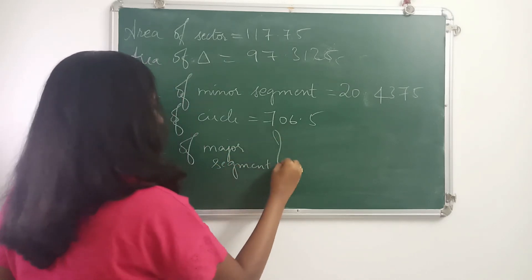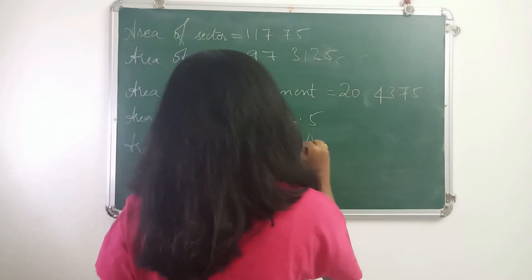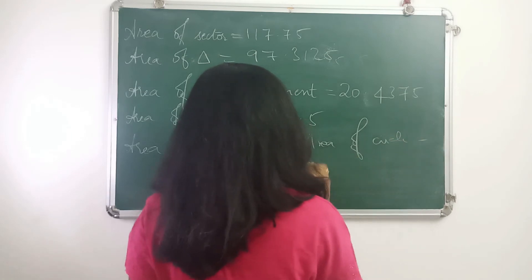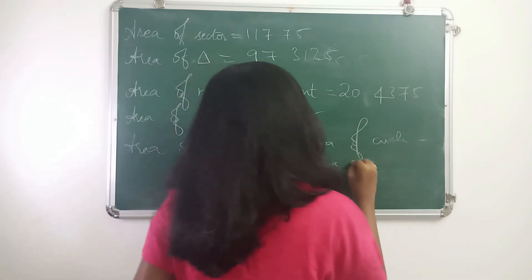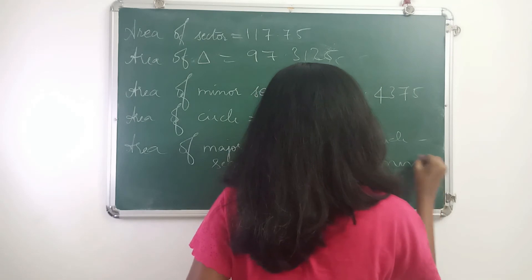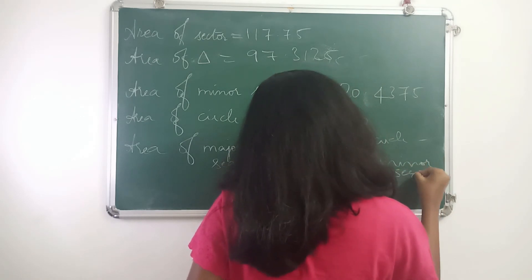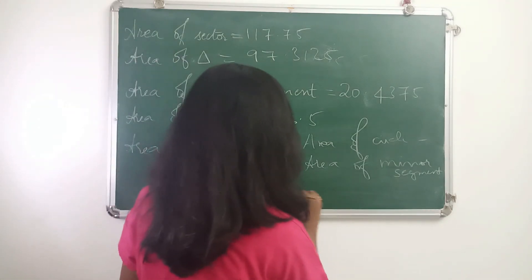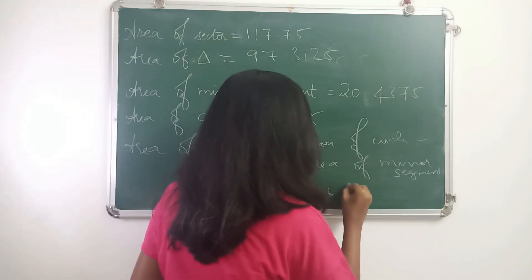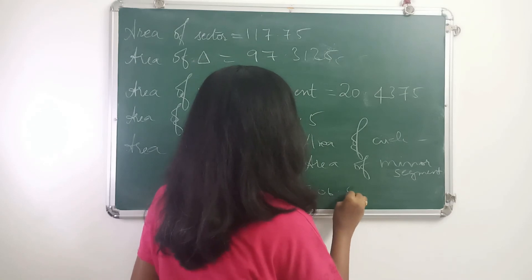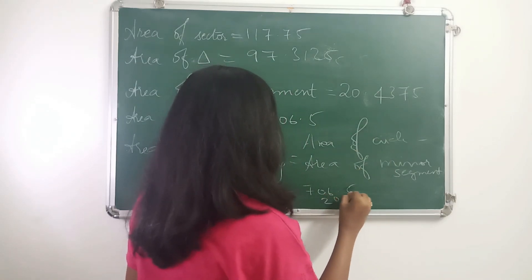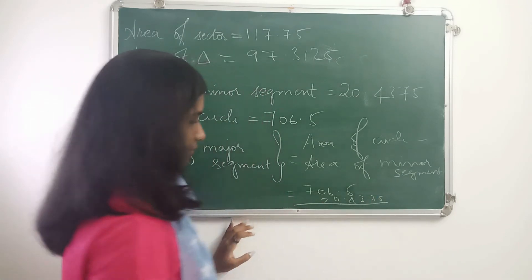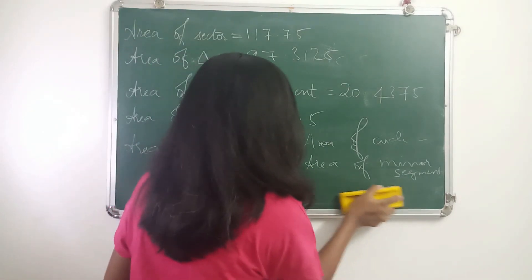Area of major segment is equal to area of circle minus area of minor segment. Area of circle is 706.5 and area of minor segment is 20.4375. Now subtracting them.